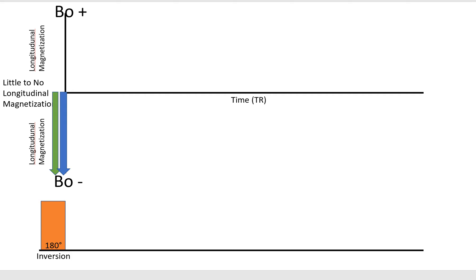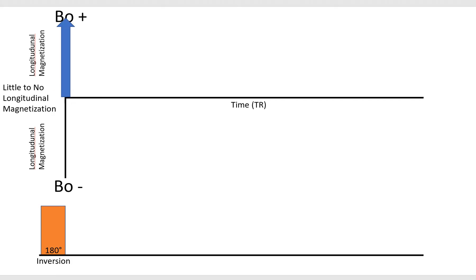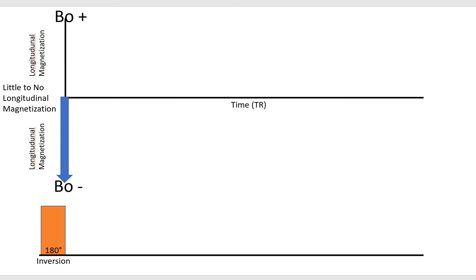Let's focus on a single tissue — tissue Y. The 180-degree inversion pulse has flipped this tissue into the negative B0 plane, giving it 100% recovery in the negative direction. Over time, it will decrease in magnitude, recovering at its own rate, until it reaches the null point — the moment where, if we apply the excitation pulse, there will be very low signal intensity from this specific tissue. This is where the correct inversion time, TI, comes in.